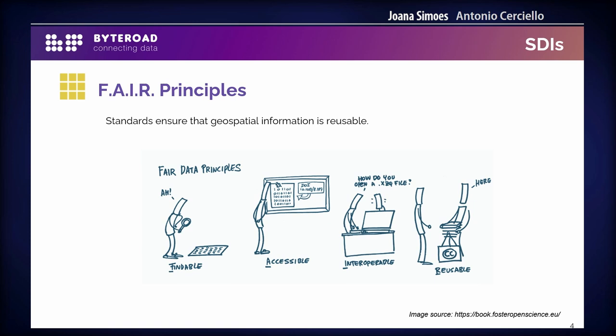We want to do this according to the FAIR principles. The FAIR principles describe what we say: information needs to be findable, accessible, interoperable, and reusable. Ultimately, we want people to be able to use our data for building other research, for creating products, services, etc. Otherwise, the data remains in silos.